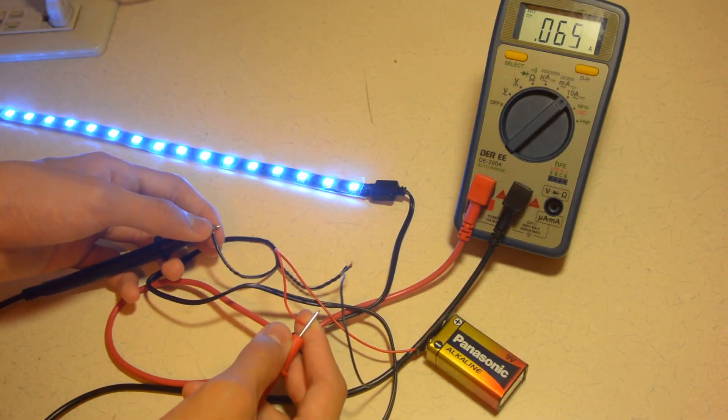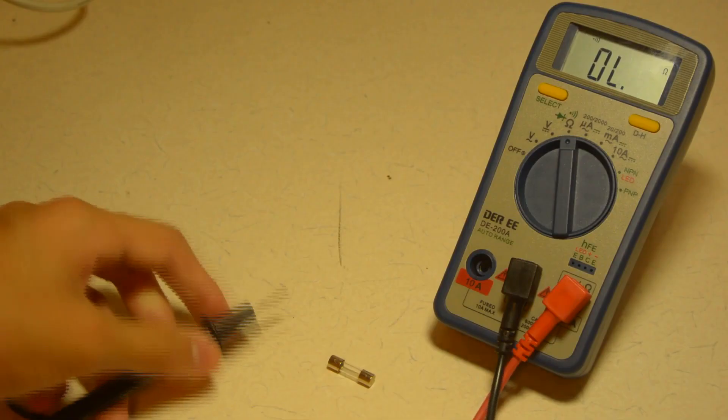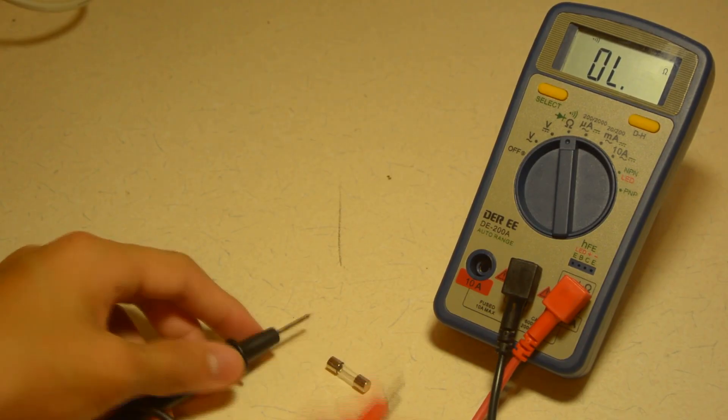In this video, I'm going to be showing you how to properly measure DC current on the multimeter so you don't accidentally blow a fuse or even worse, destroy your multimeter.